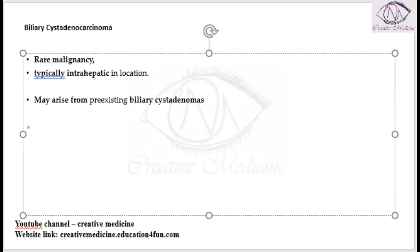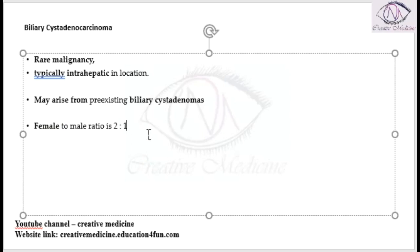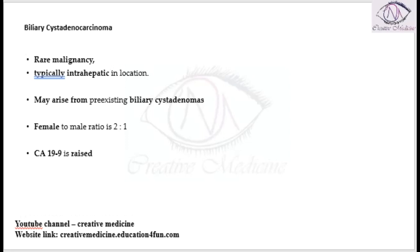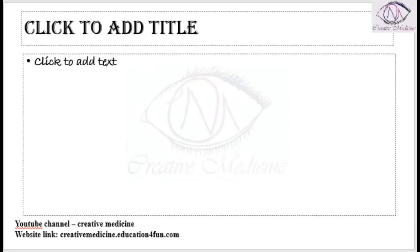It is seen more commonly in females with a female to male ratio of around 2 to 1. CA antigen 19-9 is found to be raised in biliary cystadenoma, and in biliary cystadenocarcinoma, CA 19-9 level is also found to be raised.